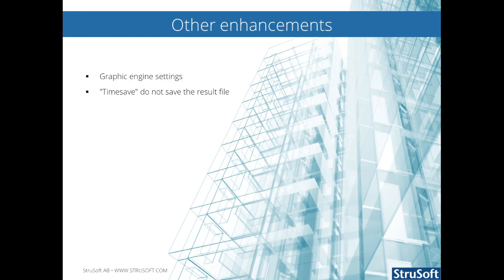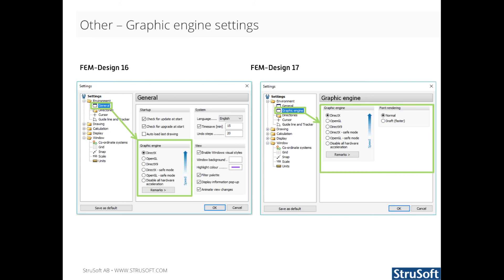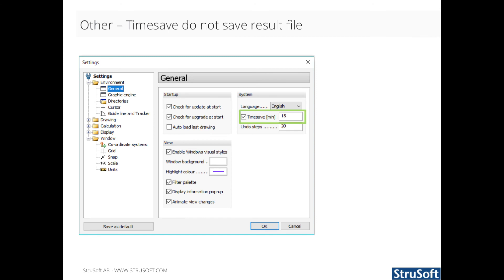Here are some other enhancements in FemDesign 17. The graphical settings has been moved to environment, graphic engine, and two font rendering options are available. The draft mode makes drawing text on the screen much faster but lowers the quality. Timesave in FemDesign 17 will not save the result file any longer, but only the input file. This ensures a quite fast model backup using less disk space. There is no option to save the result file when in timesave — to save the result file, please save the model from File > Save or Ctrl+S.